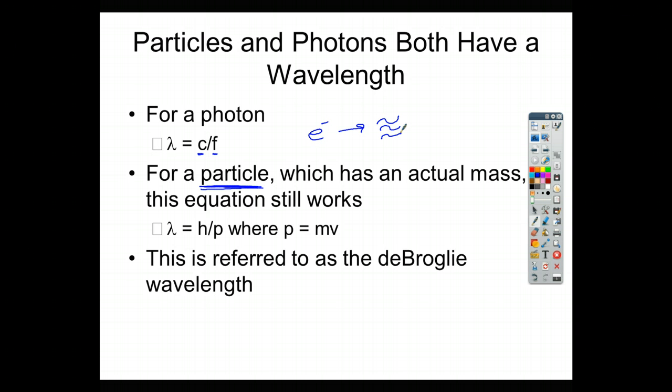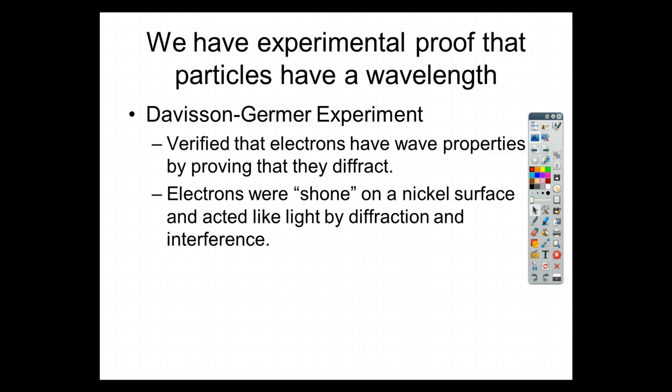So for a particle which has actual mass, the equation does still work, where we can say that the wavelength is equal to Planck's constant divided by the momentum, where the momentum for a particle is just mass times velocity. So this is what we call the de Broglie wavelength. And everything has a de Broglie wavelength as long as it has mass. On the next slide, we'll look at that a little bit.